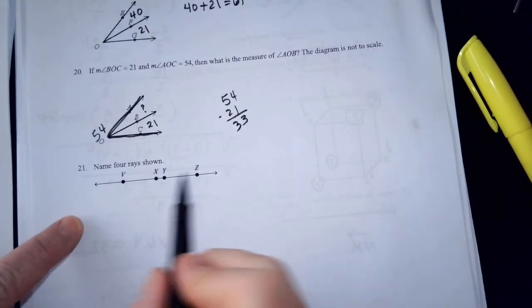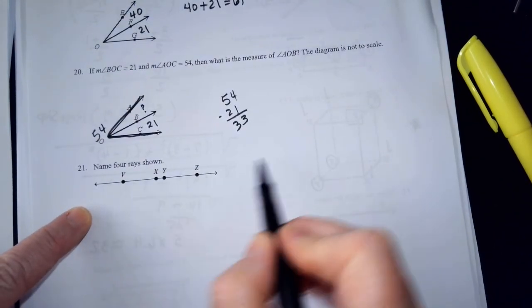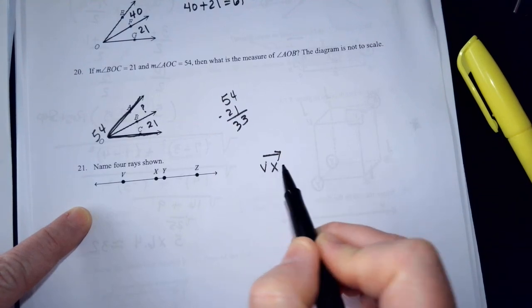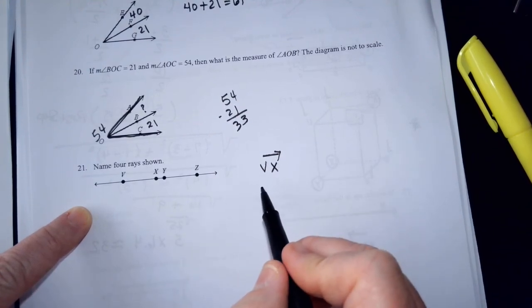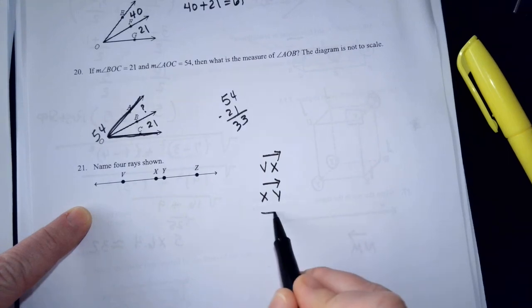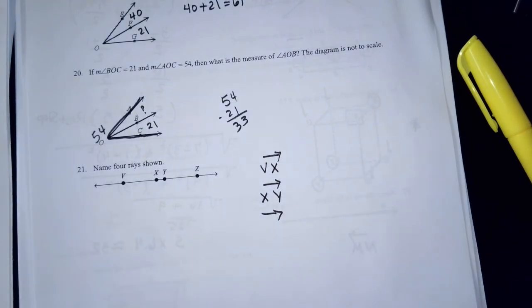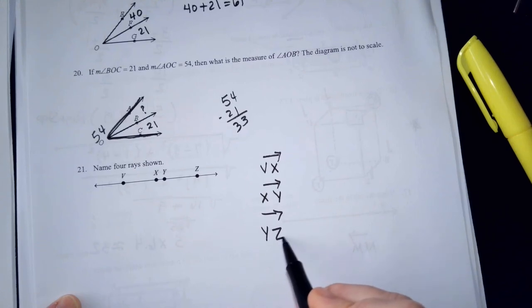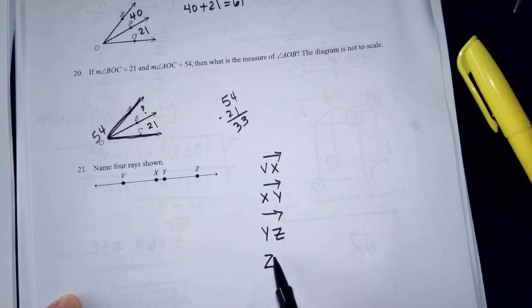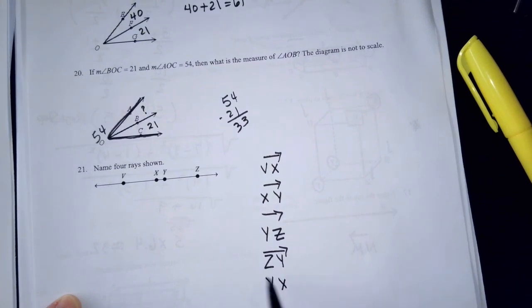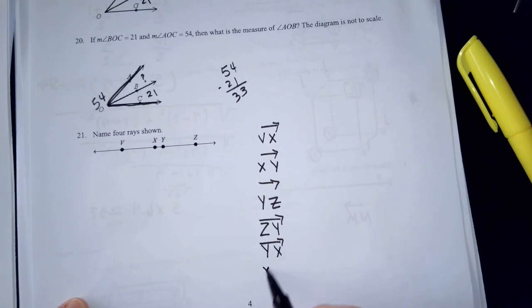Name the four rays shown here. If you start at V, what would that ray be? VX. XY. You could have XY. XY and XY are the same ray. What if you started at Y and went the other way? YX. What if you started at X and went the other way? XV. You could do it with puns.